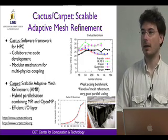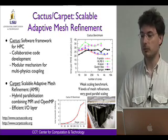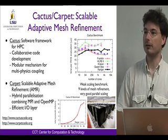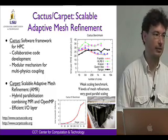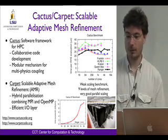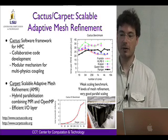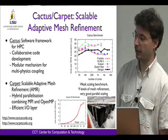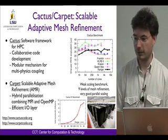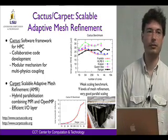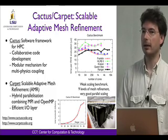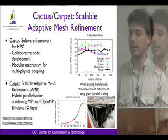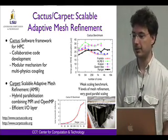We have developed the Cactus framework and the Carpet adaptive mesh refinement infrastructure to run simulations on the largest supercomputers. Cactus is a software framework for high-performance computing whose major strength is collaborative code development, allowing coupling of different physics such as the Einstein equations and hydrodynamics. We have also developed Carpet, a scalable adaptive mesh refinement driver employing a hybrid communication model combining MPI and OpenMP. The slide shows a Cactus scaling benchmark with nine levels of mesh refinement from 16 to up to 12,000 cores — the black line shows Ranger performance. This is a weak scaling graph, so the ideal line is horizontal, and we are very close to ideal scaling.